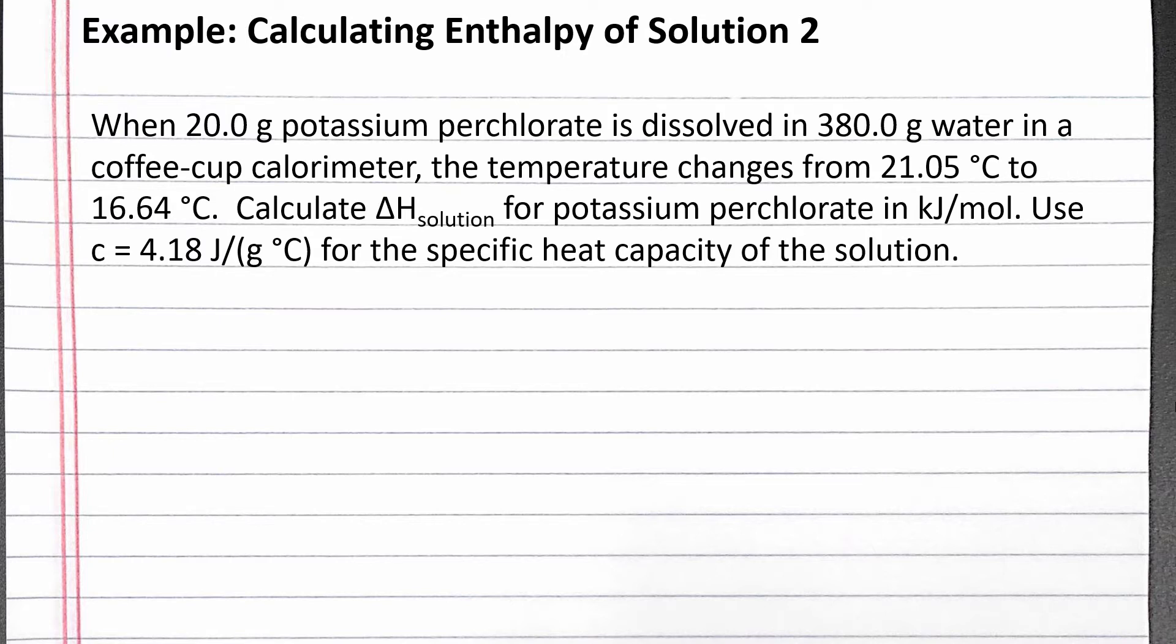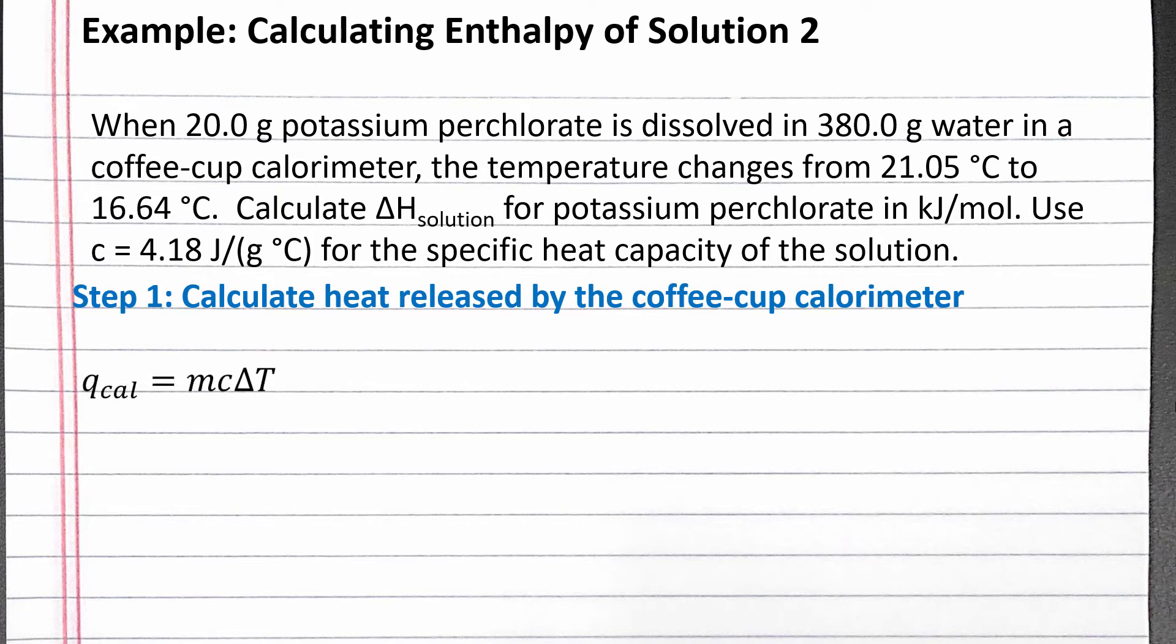Our first step is to calculate the heat released by the contents of the coffee cup calorimeter. We use the equation: heat equals mass times specific heat capacity times change in temperature. The total mass inside the calorimeter is 20.0 grams of potassium perchlorate plus 380.0 grams of water.